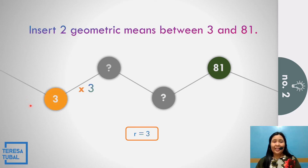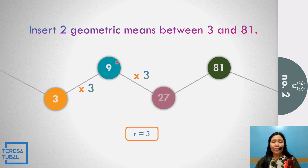So, the two geometric means between 3 and 81 are 9 and 27.